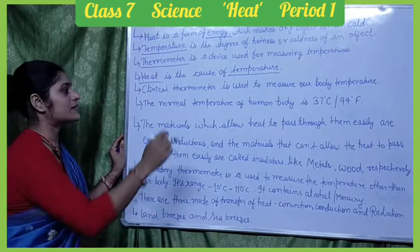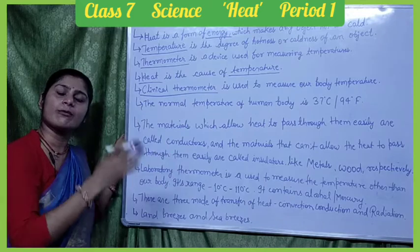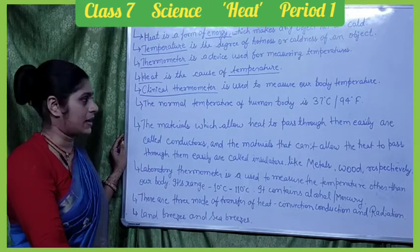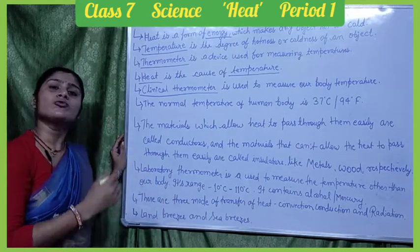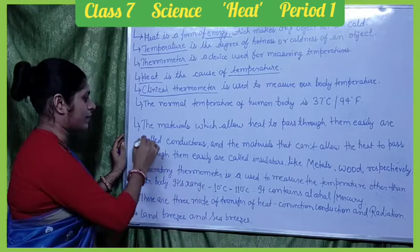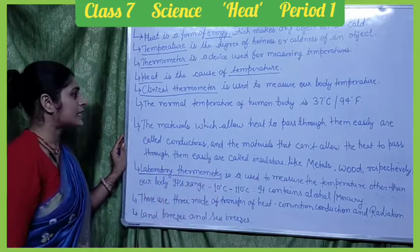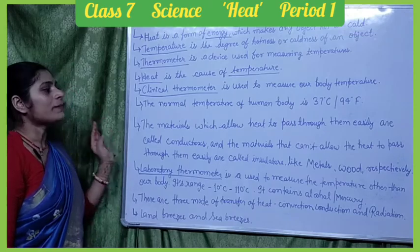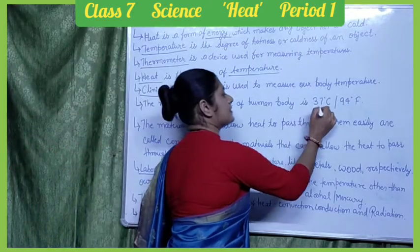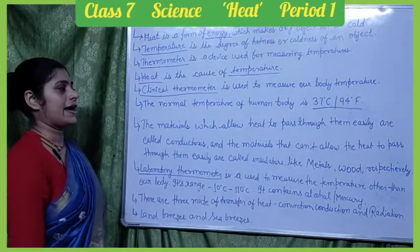Clinical thermometers measure our body temperature. Laboratory thermometers are used to measure the temperature of other objects. The normal temperature of the human body is 37 degrees Celsius, which is 98.6 degrees Fahrenheit.